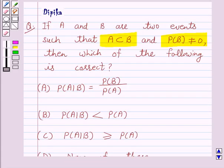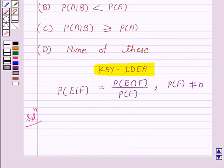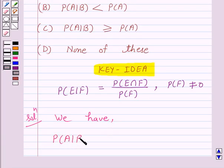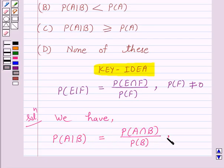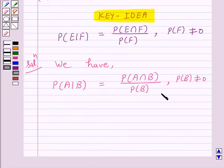And we have to choose the correct option from A, B, C, and D. Now according to our key idea, we have probability of A given B is equal to probability of A intersection B over probability of B, provided probability of B is not equal to 0. Let us label this as equation 1.